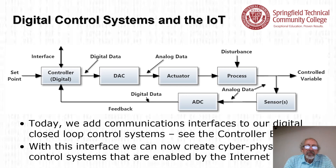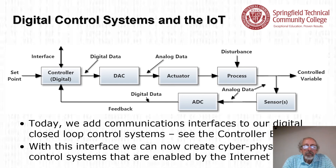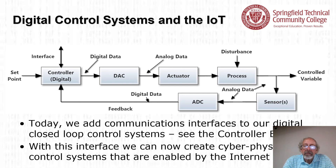What about digital control systems and the Internet of Things? Recently, a communication interface has been added to digital closed loop control systems. The controller has an interface — indicated by a bidirectional arrow — allowing it to send and receive data. With this interface, we can create cyber-physical control systems enabled by the Internet, using a network interface to get onto the Internet.